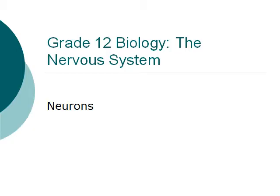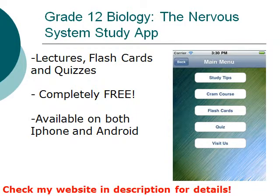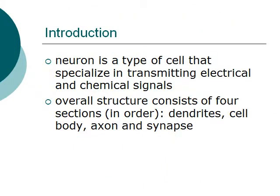Hello everyone, welcome to the Grade 12 Biology Nervous System course. Today I am going to talk about neurons. If you have not done so already, I highly recommend you download our free mobile app called Grade 12 Biology: The Nervous System Study App. A link is provided in our YouTube description. It has lectures, flashcards, and quizzes related to this topic. It is completely free and available on both iPhone and Android.